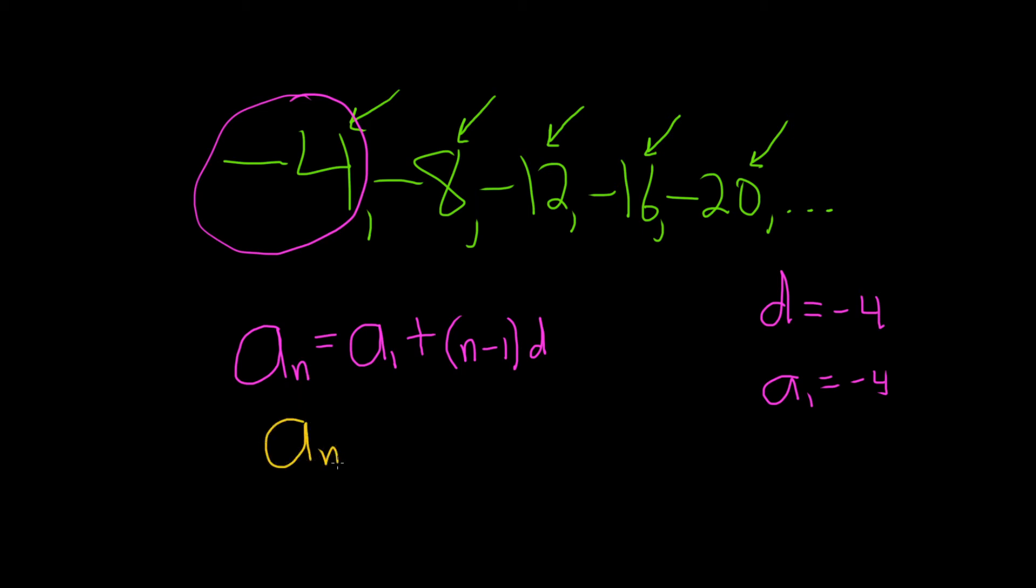So a sub n equals a sub 1, which is negative 4, plus parentheses n minus 1 times d. d is negative 4.